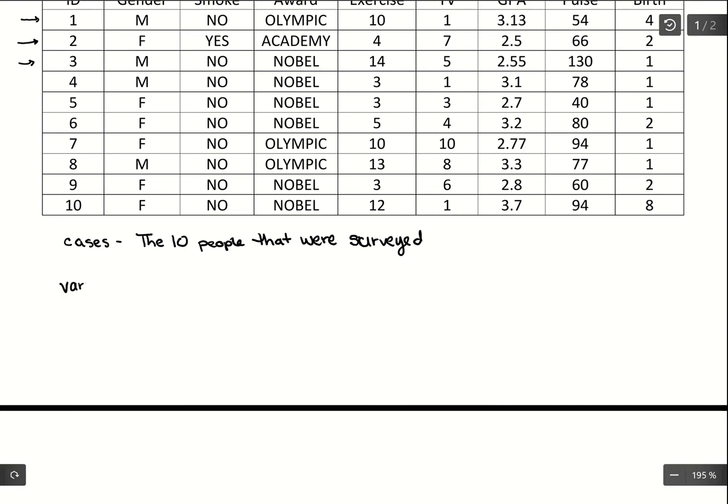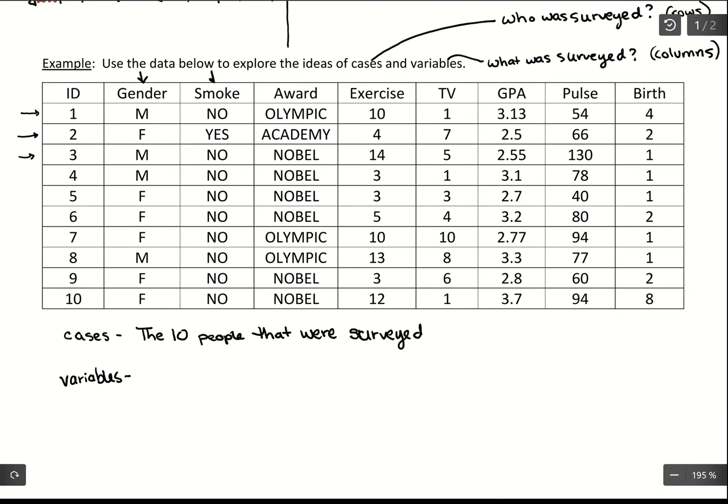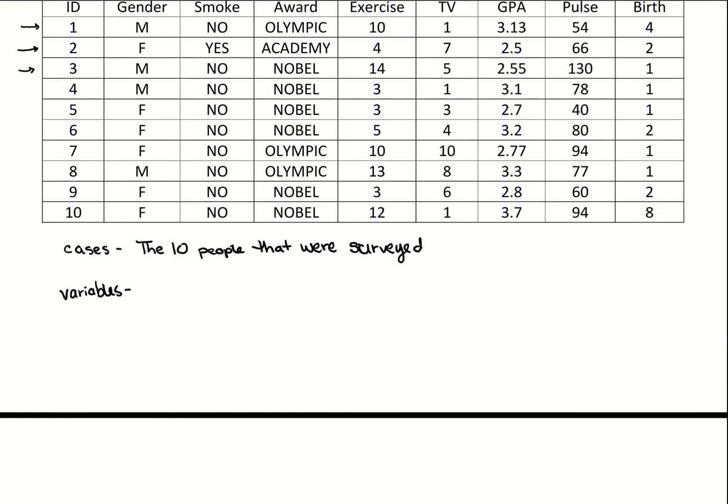Then the variables. So up above, we talked about the types of variables, but if we want to know what the actual variables are, you look at the columns. For the columns, you're going to have these titles here, and the titles are going to be our variables. So one variable was gender. Another variable was whether or not they smoke. Award, exercise, TV, GPA, pulse, and birth order. And the ID you can leave out. I leave it out because it's not an actual variable of the person. It's just something that was assigned to them. Maybe if it was something like G numbers, then I'd be more interested in it. But this looks like something just to organize the table. So leave it in, leave it out, either way is good.